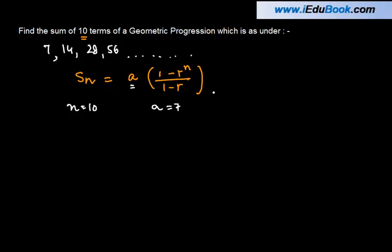And the common ratio r can be found out by dividing any two terms. So, we divide 14 by 7, we get r is equal to 2. So, the common ratio is 2.